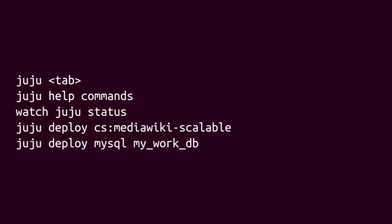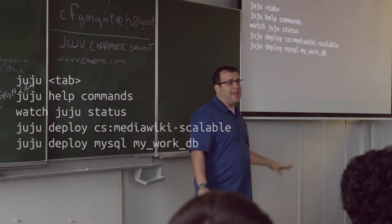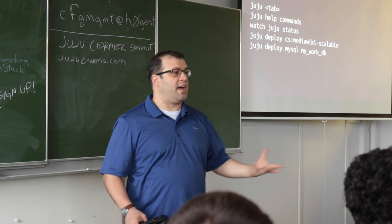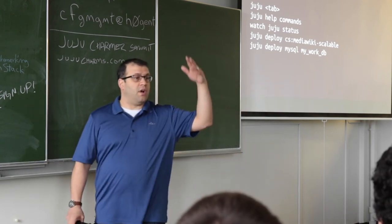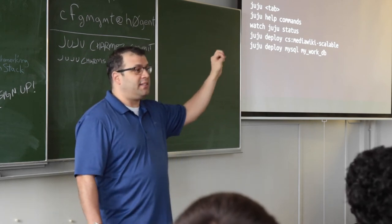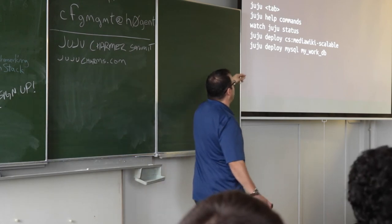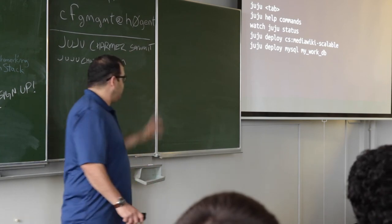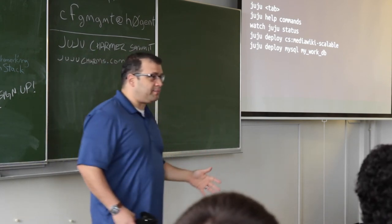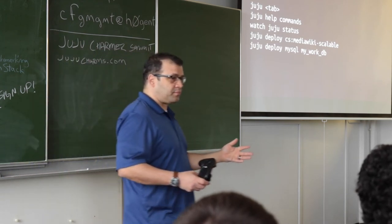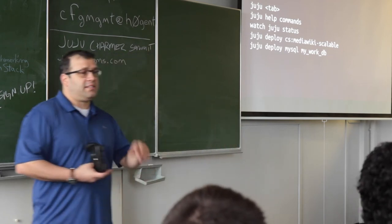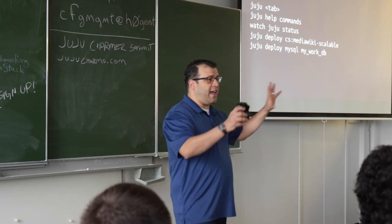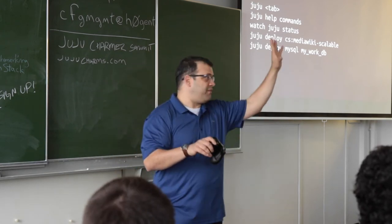After bootstrap, type 'juju' and hit Tab on your keyboard — it'll show you a list of all the commands. 'Juju help commands' will show all commands, and you can always say 'juju help' followed by any command, like 'juju help deploy,' and it will tell you all the features of that command. I like to open a new terminal and type 'watch juju status.' Juju status shows everything happening in your current model: machines, deployed applications, IP addresses, state of the workload, state of Juju itself, and state of the agents.